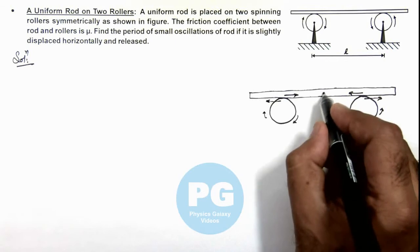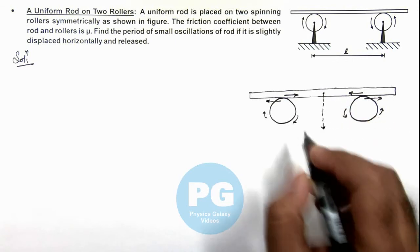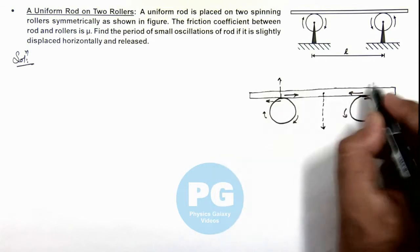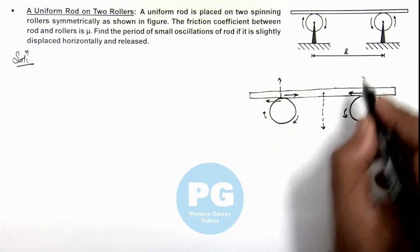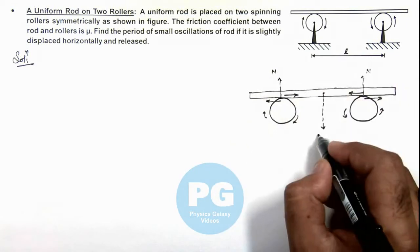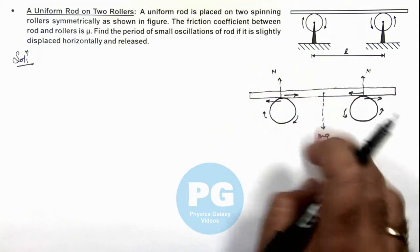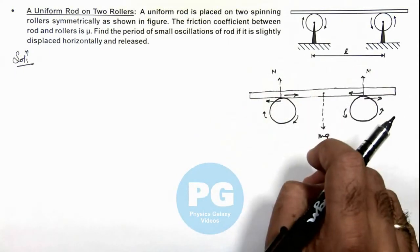Initially when the weight is acting at its central point, the normal reaction at both of these rollers would be equal. Say these are N and N, we can say the value of N will be mg/2, because 2N will be equal to mg for the equilibrium of rod in vertical direction.